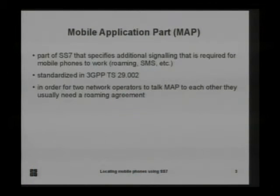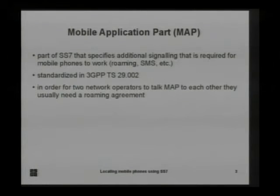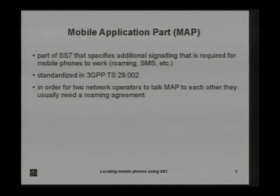SS7 is divided into several parts. The most interesting for us today is the Mobile Application Part, or MAP in short. That was specified a little bit later because mobile phones are still relatively new, and it specifies additional signaling required for mobile phones — for when you take your phone to other countries or areas, send messages, and all kinds of stuff. For two network operators to talk MAP to each other, they need a roaming agreement, meaning you can't log on to a network where your operator doesn't have a roaming agreement.